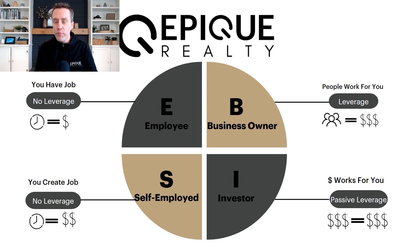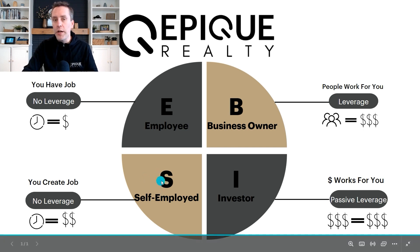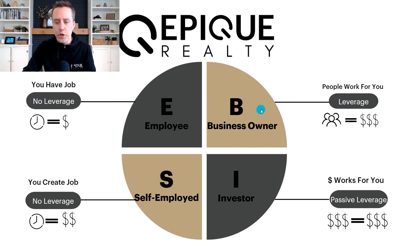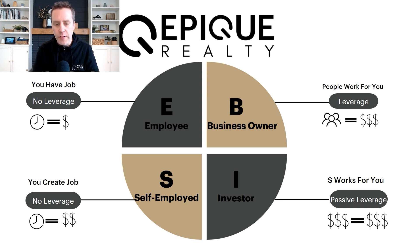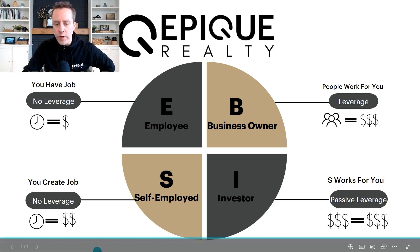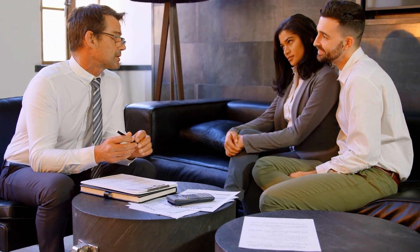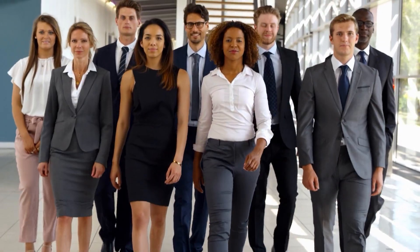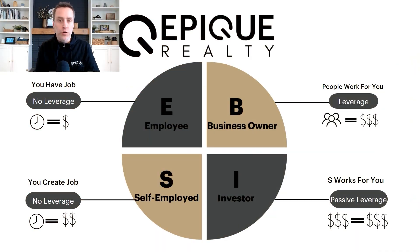If you don't have leverage in your business, you likely won't get paid much at all. Epic Realty does have tools that help us get paid in this self-employed category, but the goal is to transfer yourself over to the other side — creating more leverage. That's where we go into the Business Owner category. In old-school real estate, the only way to be a business owner was to be a broker, own your own company, or have a large team.